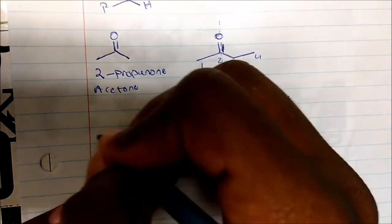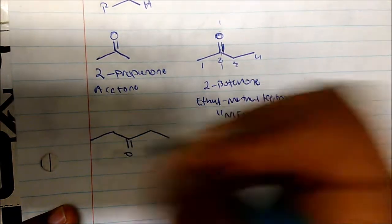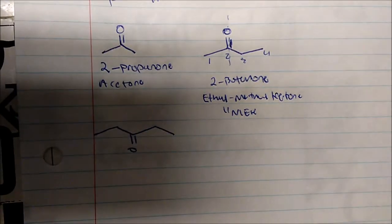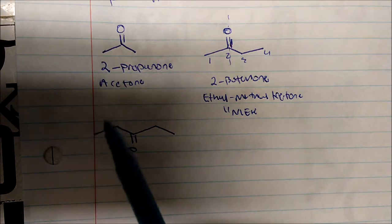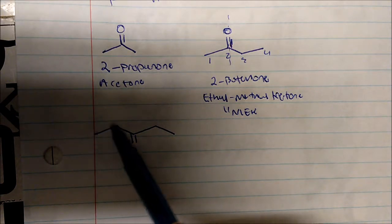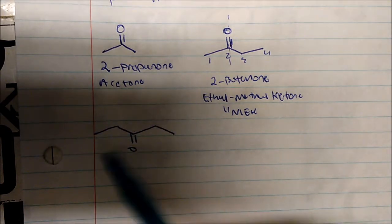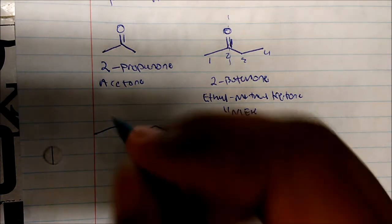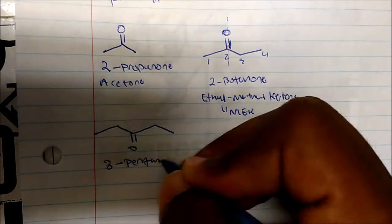What would we name this compound? We look at the longest continuous chain: 1, 2, 3, 4, 5. In this case, it doesn't matter where we start counting — we'll still get the ketone on carbon 3. So this is 3-pentanone.